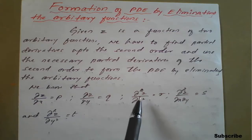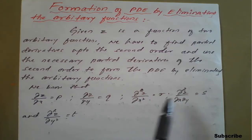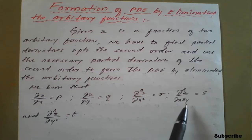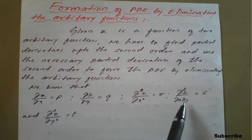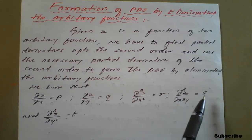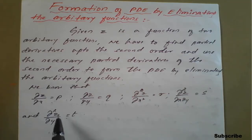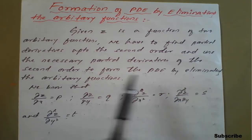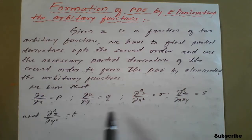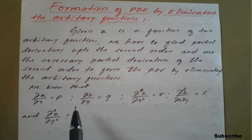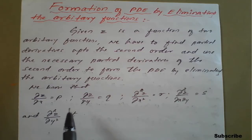We know that ∂z/∂x is notationally denoted as p, ∂z/∂y as q, ∂²z/∂x² as r, ∂²z/∂x∂y (or ∂y∂x) as s, and ∂²z/∂y² as t. Using this basic information on partial derivative notation, we will see examples based on formation of partial differential equations by eliminating the arbitrary functions.